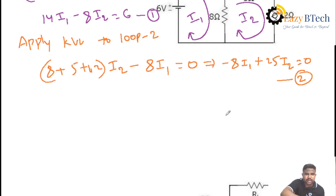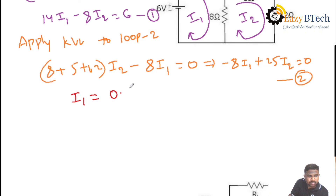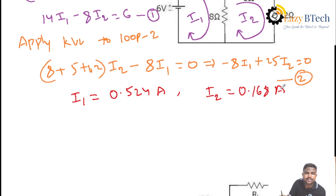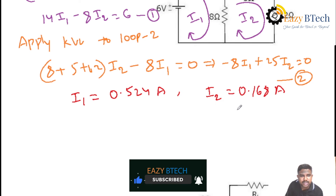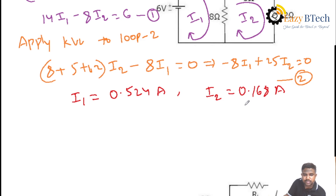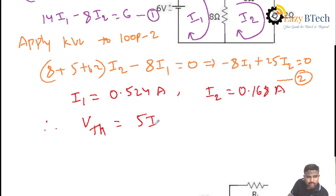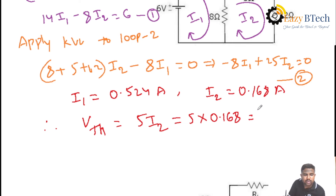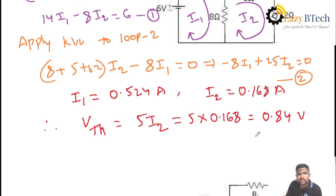Solving equations 1 and 2, the value of current I1 is 0.524 A and the value of current I2 is 0.168 A. After finding the loop currents, our aim is to find Thevenin's voltage across 5 ohms. The current passing through 5 ohms is I2. Therefore, Vth equals the voltage drop across 5 ohms: V equals IR, so 5 into 0.168. Hence, Thevenin's voltage is 0.84 volts.